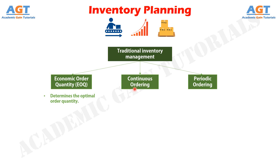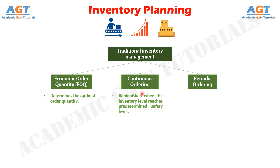Then we have the Continuous Order Model. This model of inventory management works on a fixed order quantity basis, where a trigger for fixed quantity replenishment is released whenever the inventory level reaches a predetermined safety level, triggering reordering.